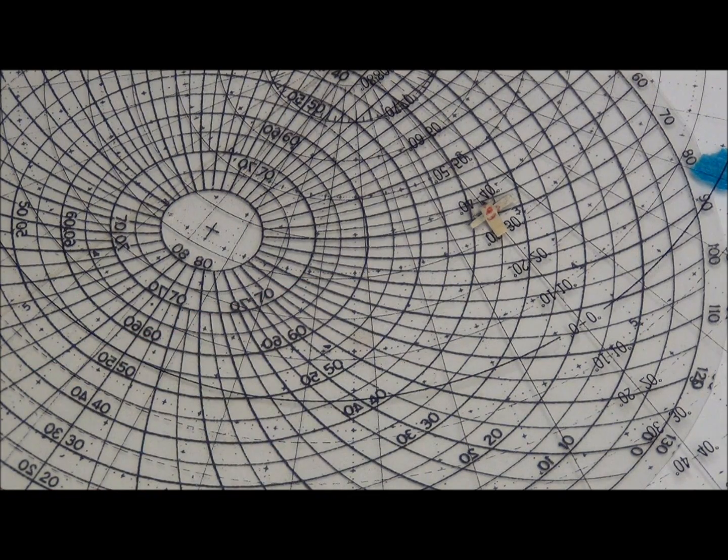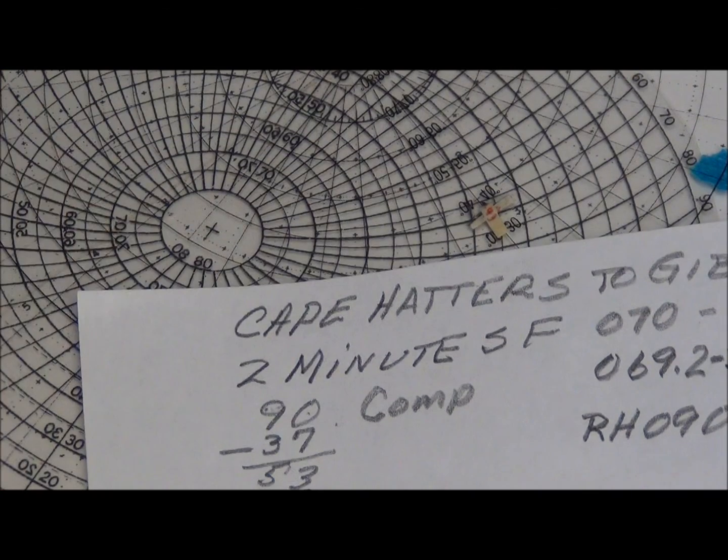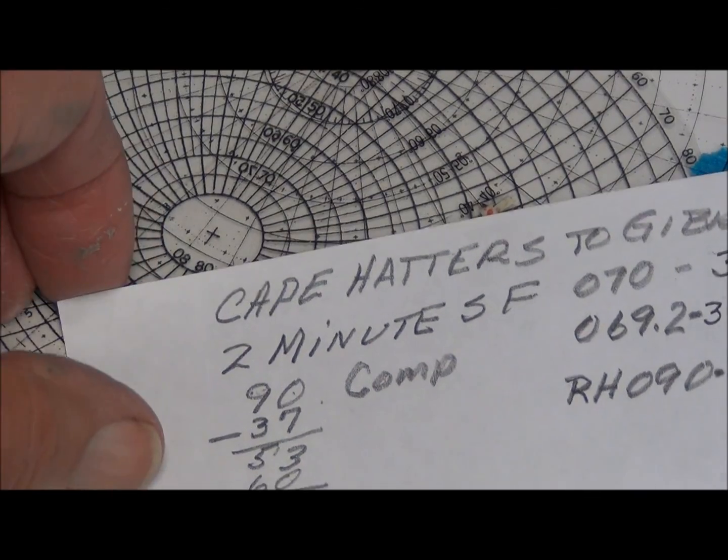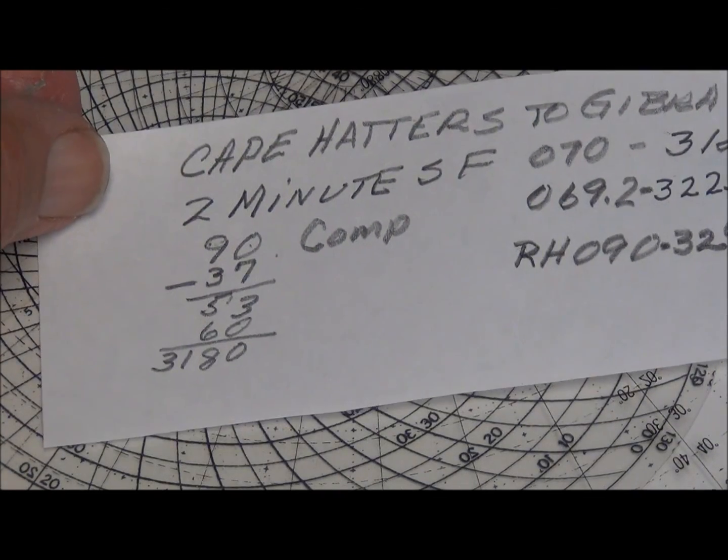Now, if I subtract that 37 from 90, I get the Zenith distance, which is the distance to the second destination. And that distance is 53.